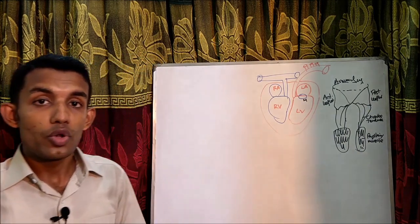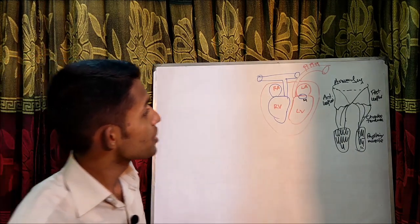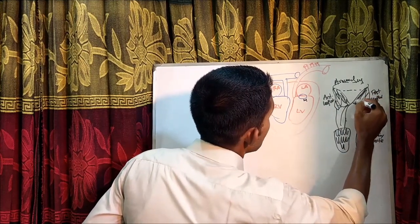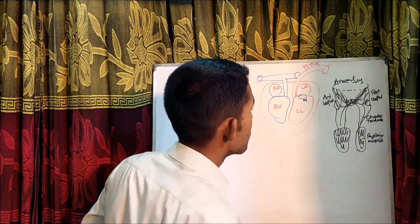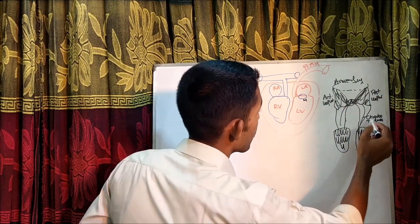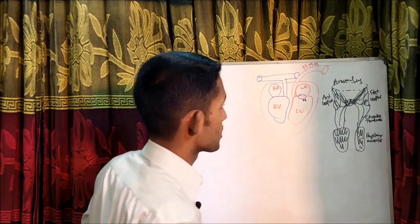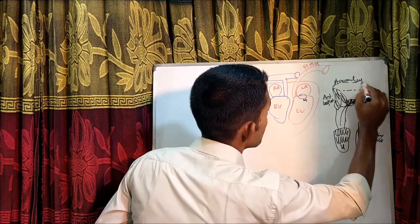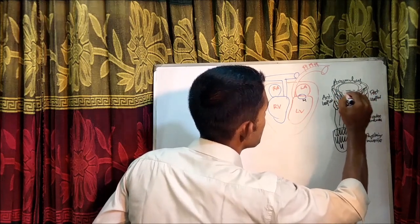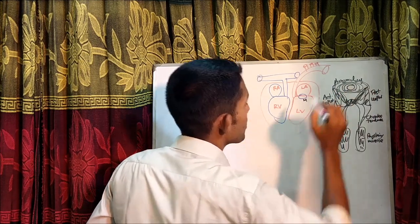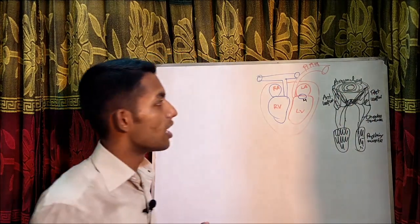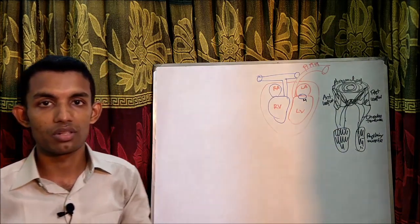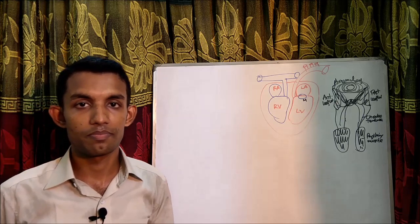In chronic rheumatic heart disease, there is fibrosis or calcification of the valve leaflets, and there may be fusion of the leaflets, chordae tendineae, or papillary muscles. Due to this fibrosis or calcification, the mitral valve orifice is gradually diminished, and blood flow from the left atrium to the left ventricle becomes obstructed.